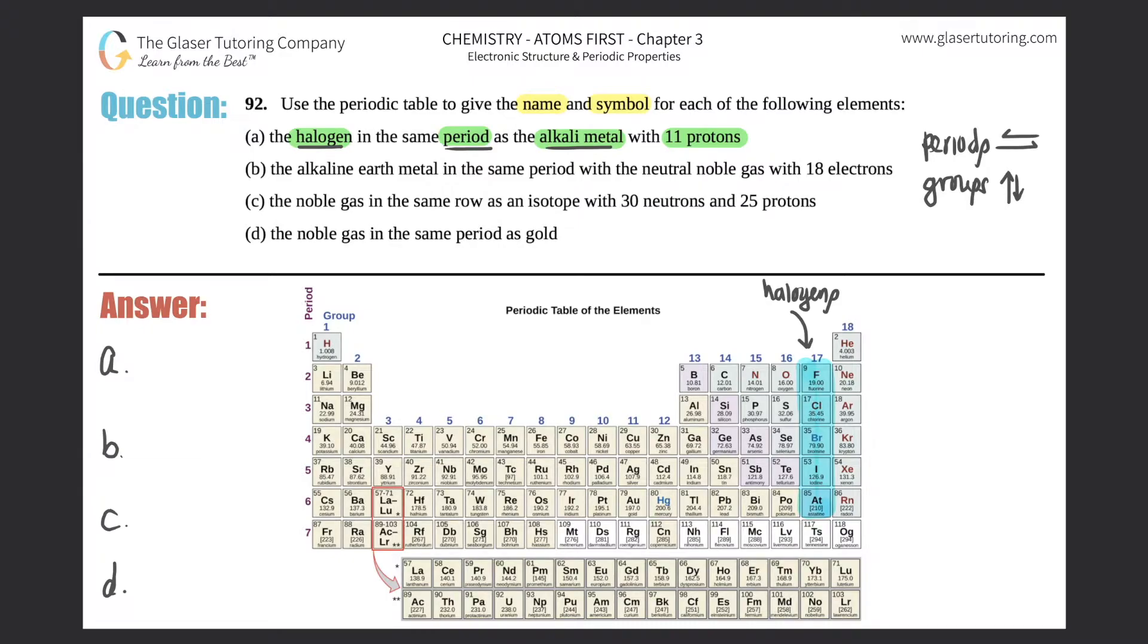Now where are your alkali metals? Alkali metals are group one, another group you have to memorize. Notice I didn't include hydrogen. It only starts from lithium and goes all the way down to francium. These are your alkali metals.